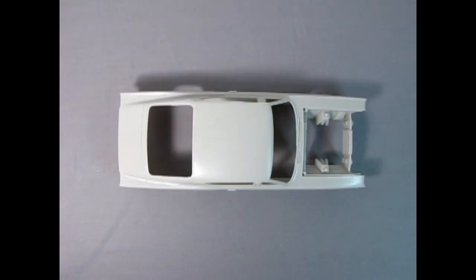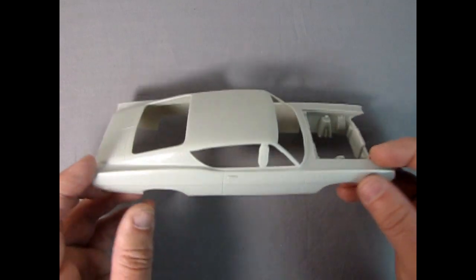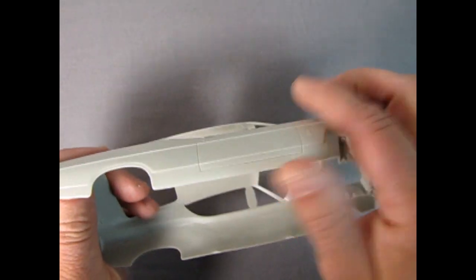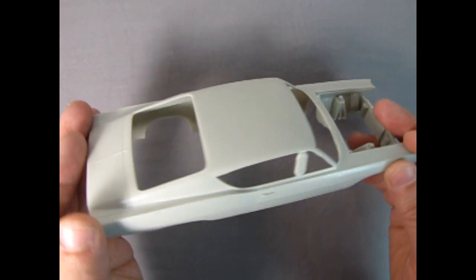First off, we have the body. Seam lines run from the front of the fenders, up the roof pillars, above the C-pillar vents, then drop behind the vents and run across the top of the rear fenders and drop to the back. These lines, and any flash along the bottom, must be removed for a smooth finish.